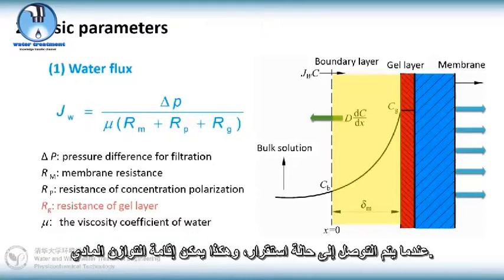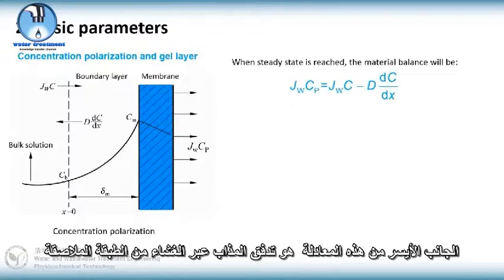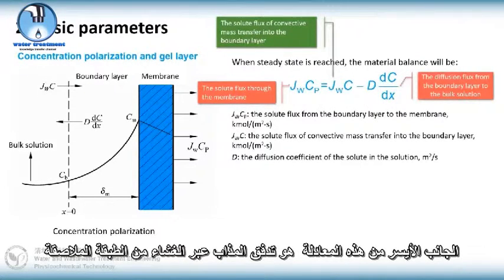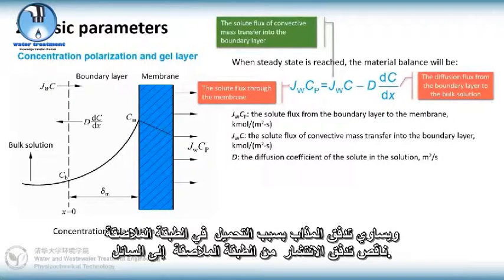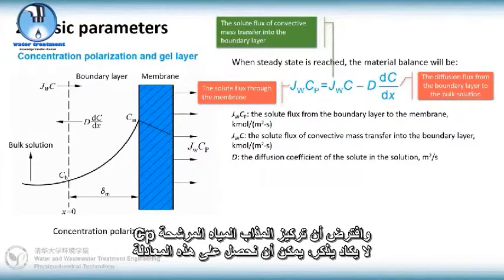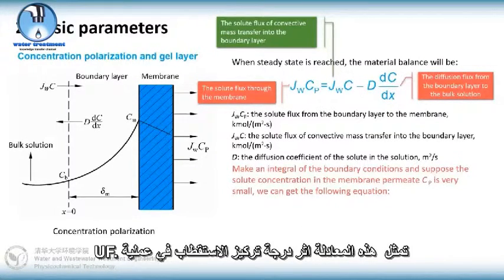When a steady state is reached, the material balance could be established like this. The left side of this equation is the solute flux through the membrane from the boundary layer. It equals the solute flux of convective mass transfer into the boundary layer minus the diffusion flux from the boundary layer to the bulk solution.